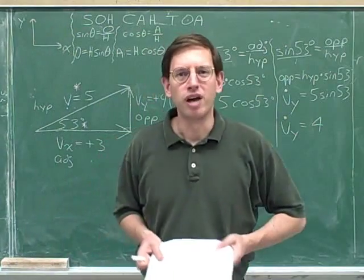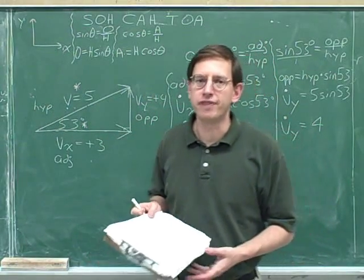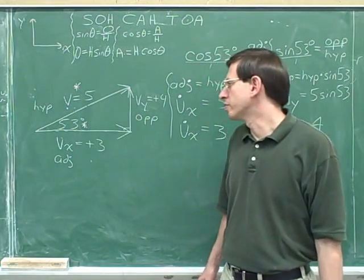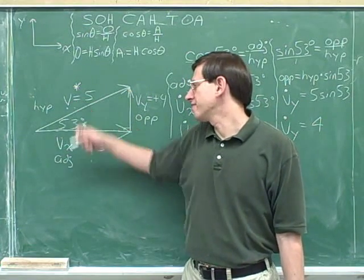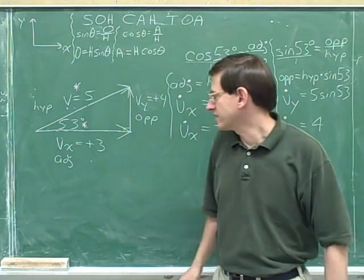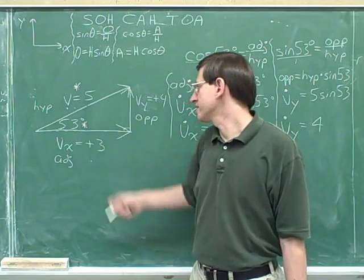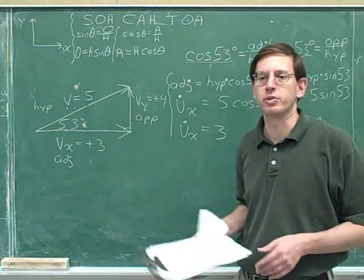Well, now we've finally accomplished our goal of seeing how to break a vector into components, or how to resolve a vector into components. Remember, we were originally told that we had a vector of length 5 pointing in a direction 53 degrees above the x-axis, and now we've figured out what its components are. Its x component is positive 3, and its y component is positive 4, using the trigonometry that we've talked about before.